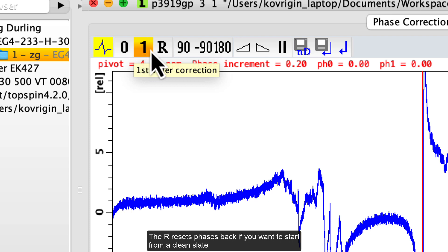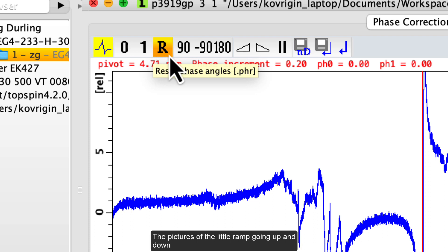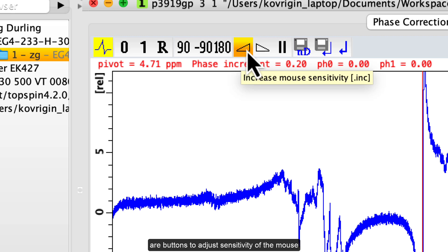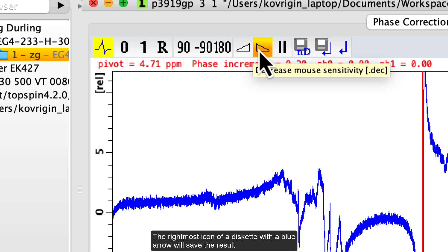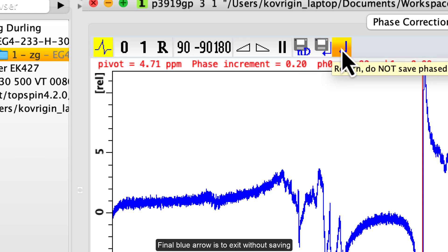The R resets phases back if you want to start from a clean slate. The pictures of the little ramp going up and down are buttons to adjust sensitivity of the mouse. The rightmost icon of a diskette with a blue arrow will save the result. Final blue arrow is to exit without saving.